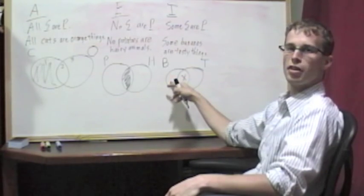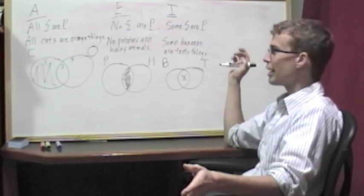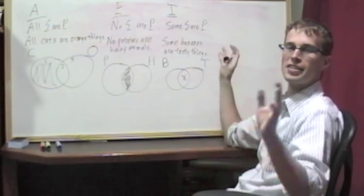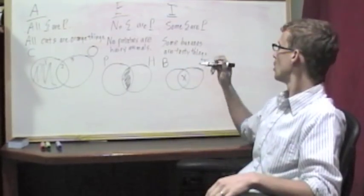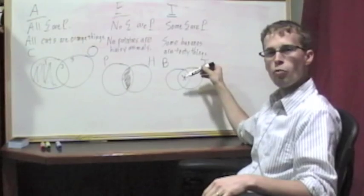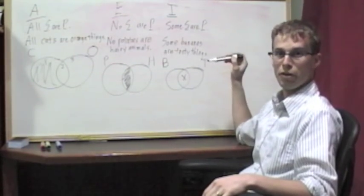There may be something on the left. There may be something on the right. We don't know. Remember, empty spaces represent possibility. There could be something there. There could not be something there. But we know based on this claim, if this claim is true, that there is something right in the middle there.